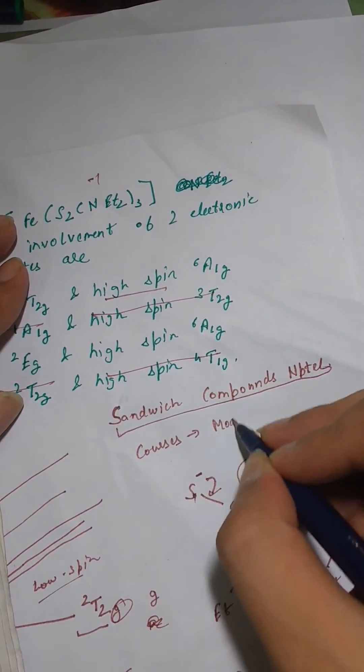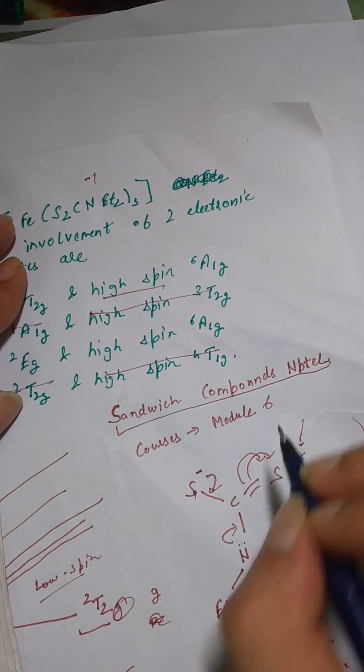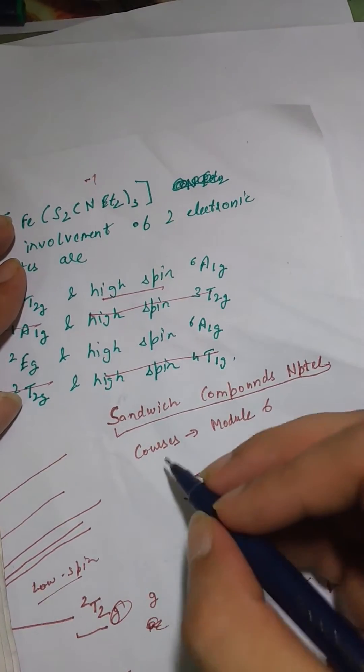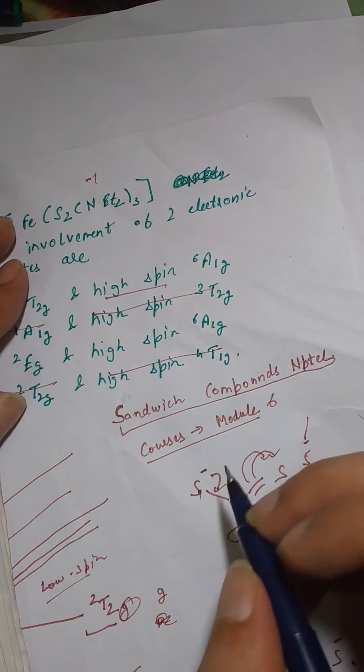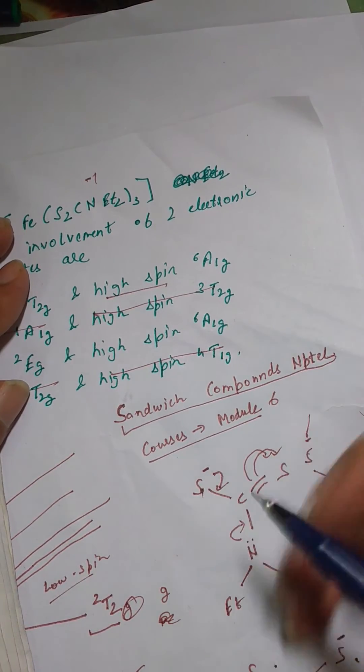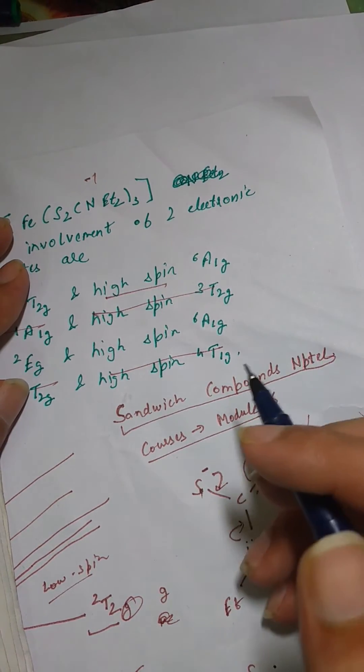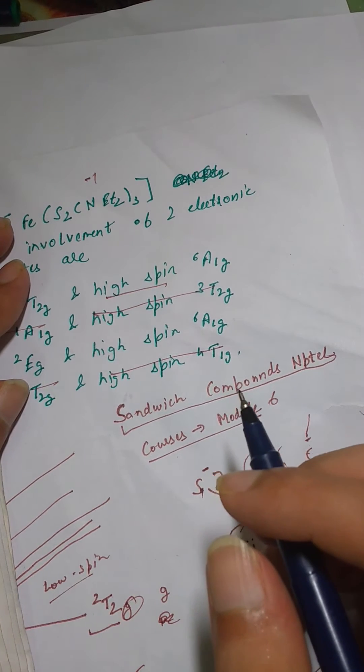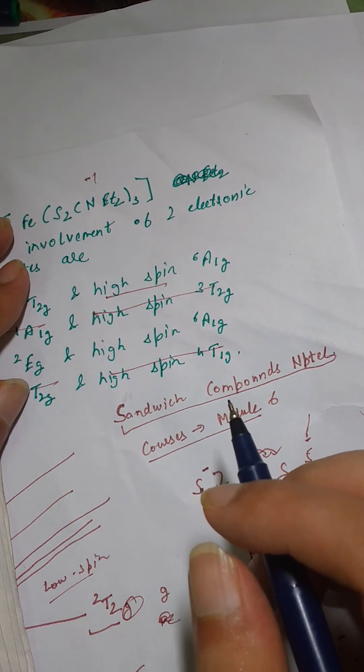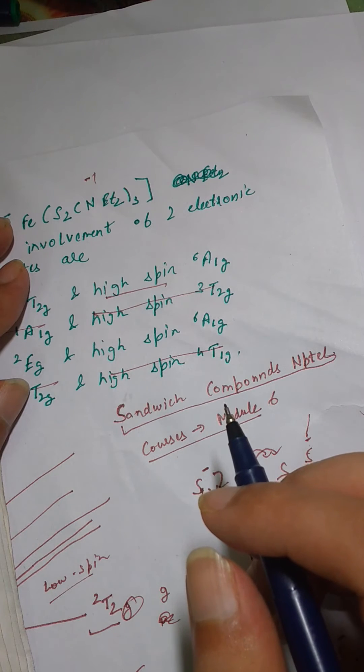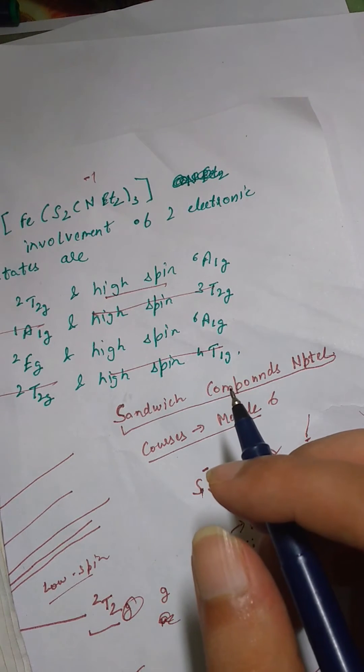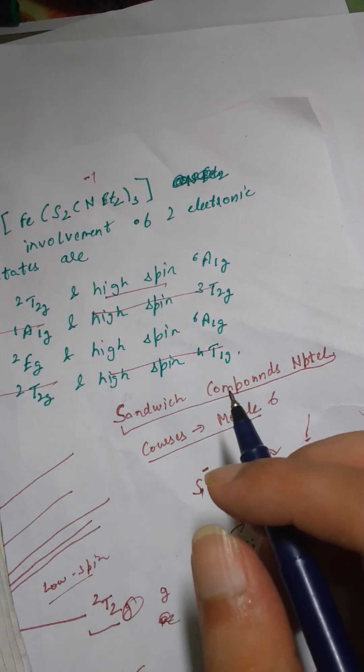then the first link will most likely be courses module 6. It's a PDF file and then if you open this the PDF will open and you can read a lot about them where in the end in the last 4 or 5 slides they have mentioned about sandwich compounds of different groups like cyclopentadiene pentadiene and one is benzene and in fact they have given the example